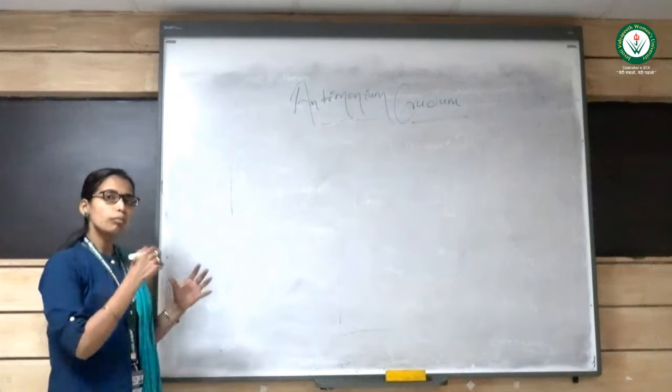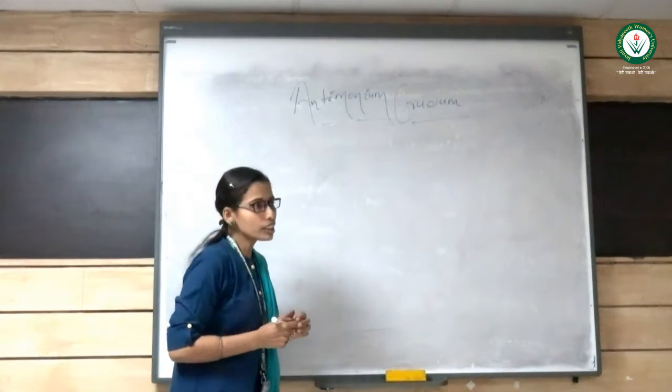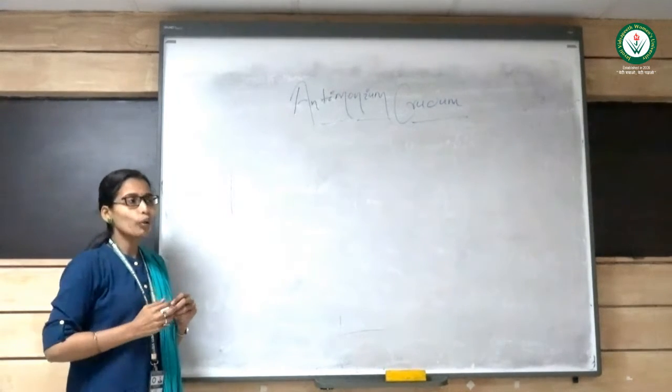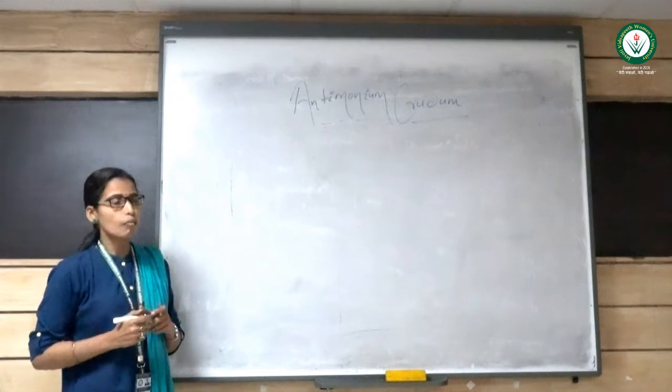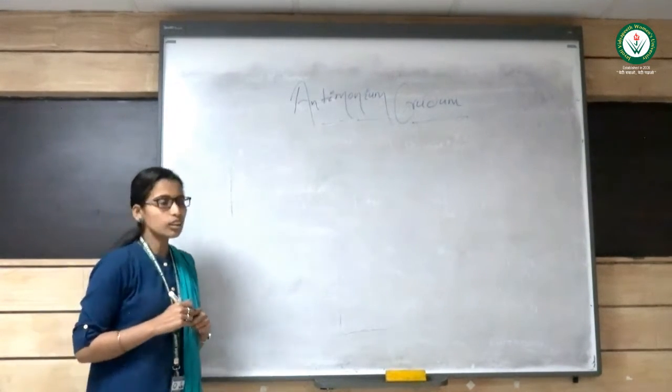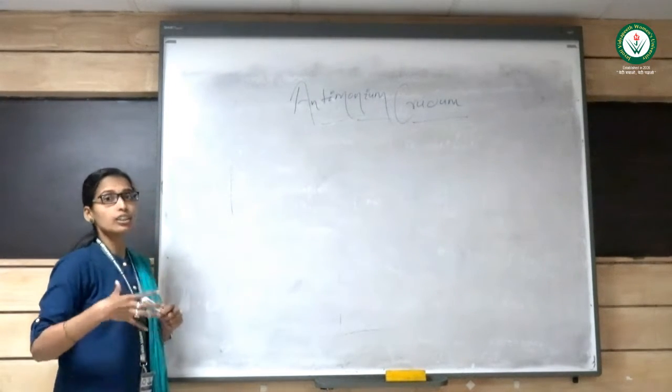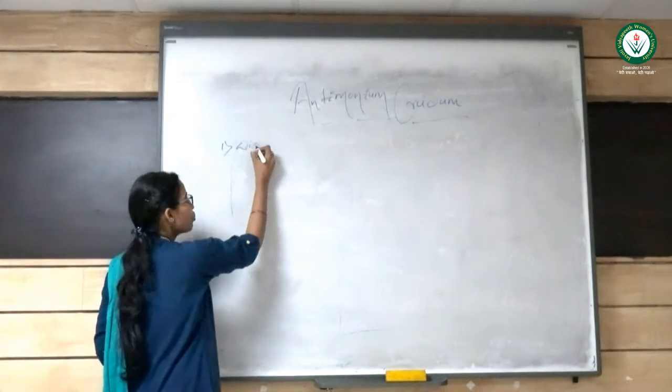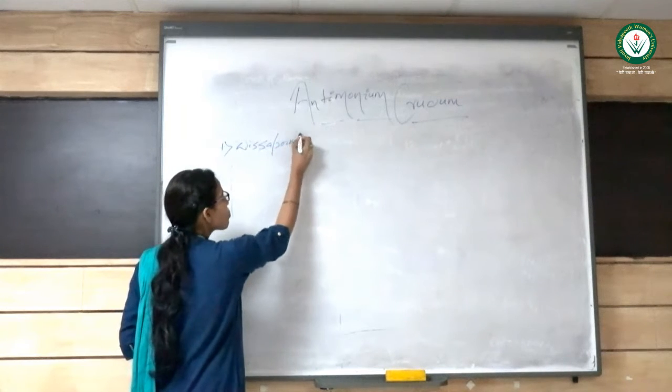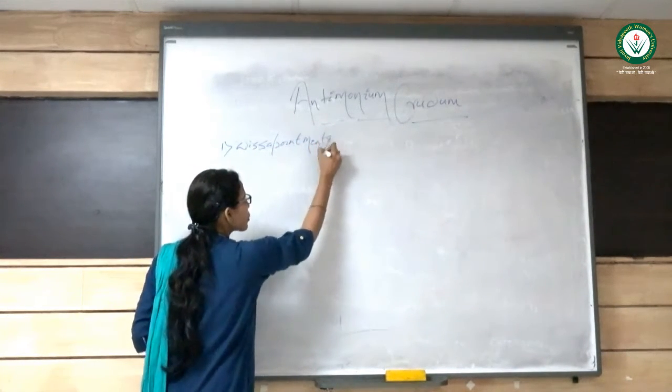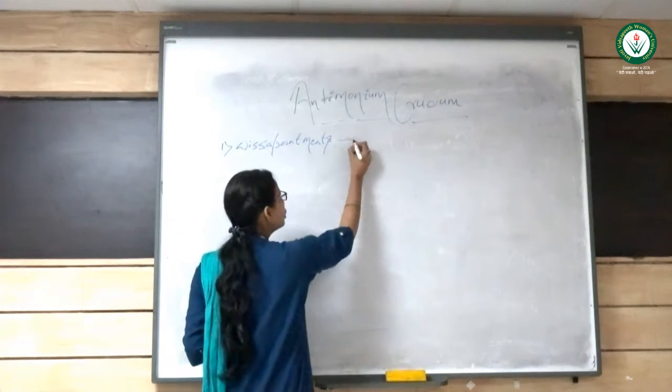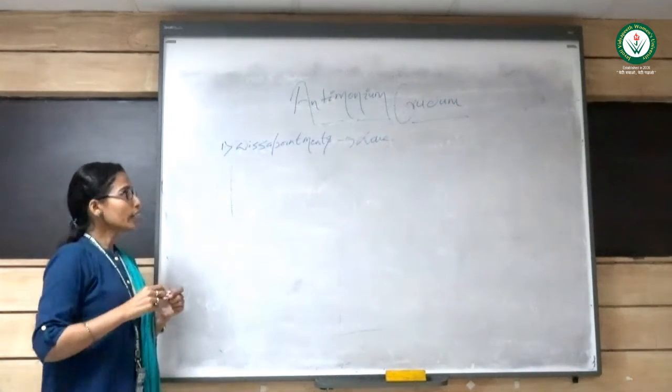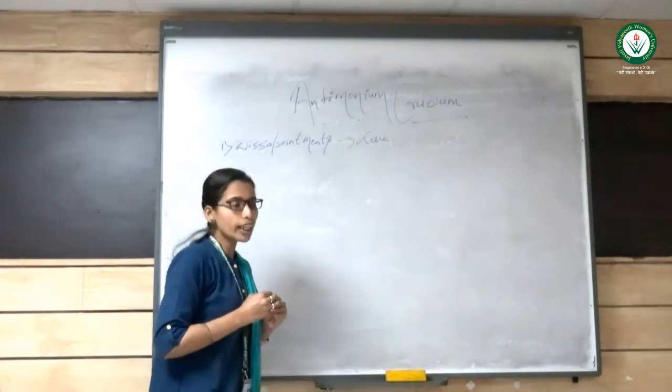When talking about the preparation and sphere of action, we have seen how the disease conditions get evolved and produced. In antimonial prudence, the first thing we see is how the diseases get produced or where they originate - it's from disappointments. The first thing is disappointments, especially from love affairs or any close associated or attached persons.